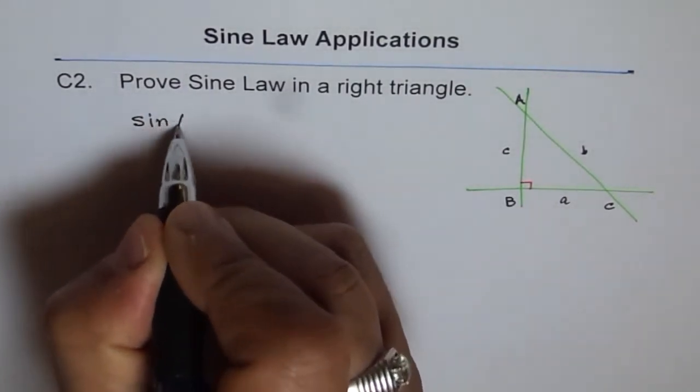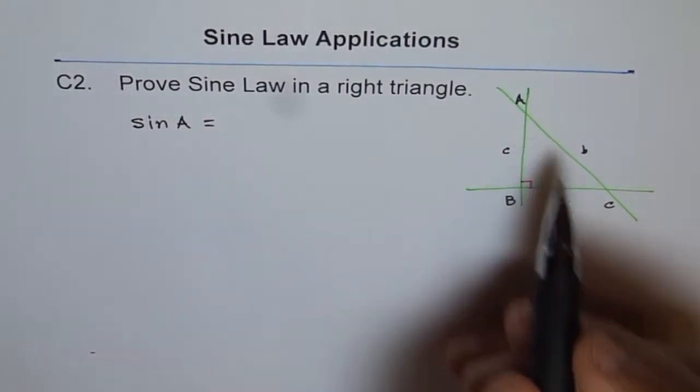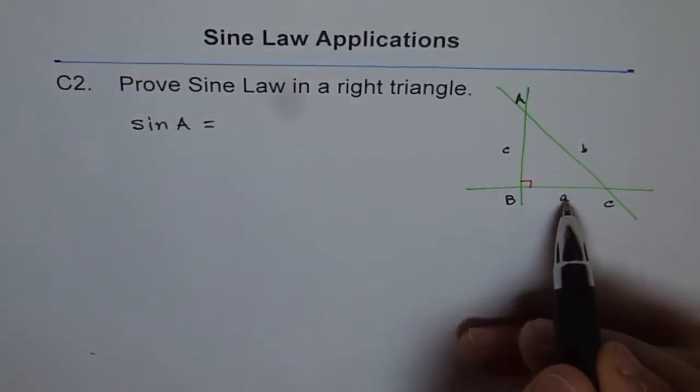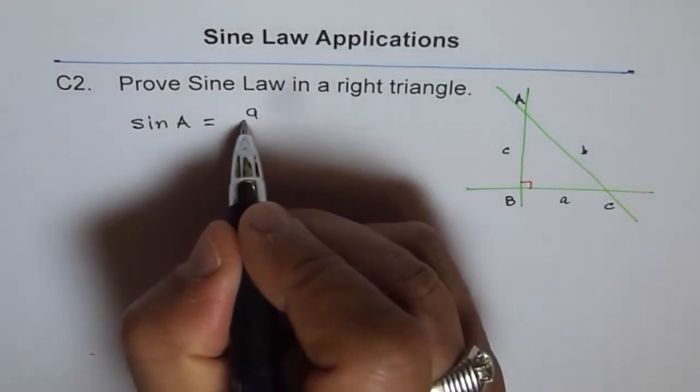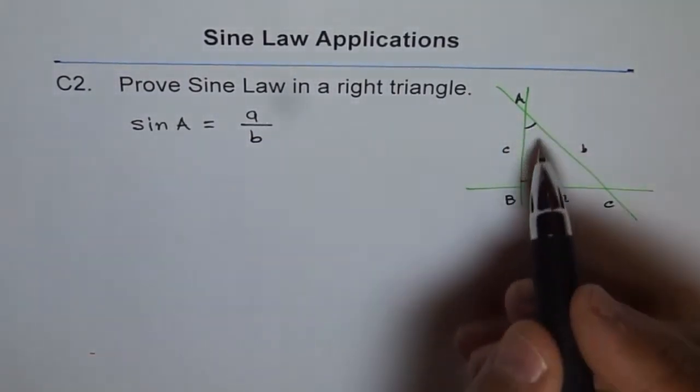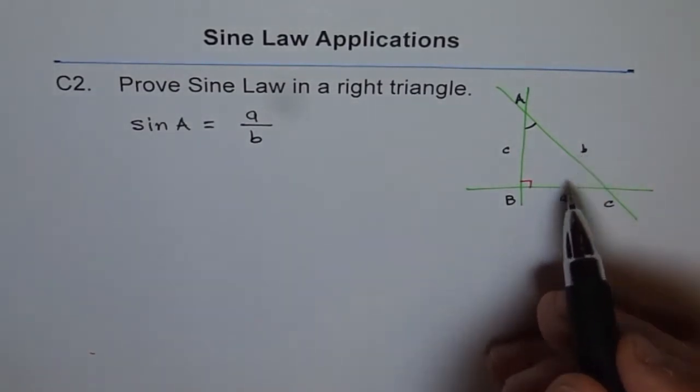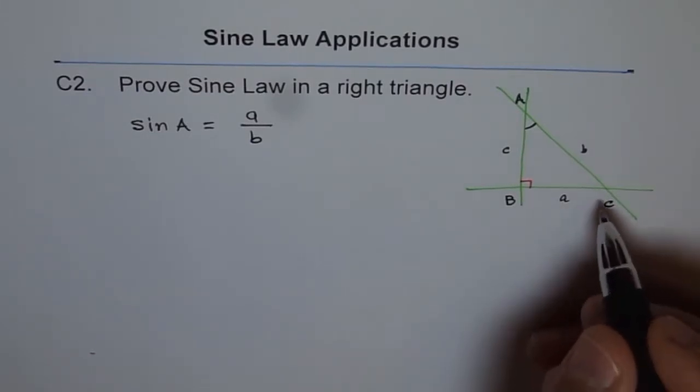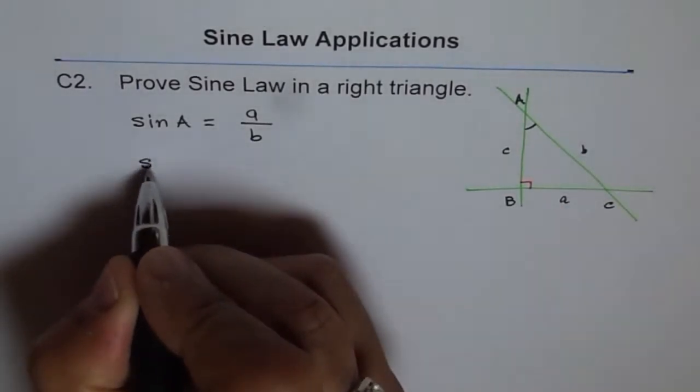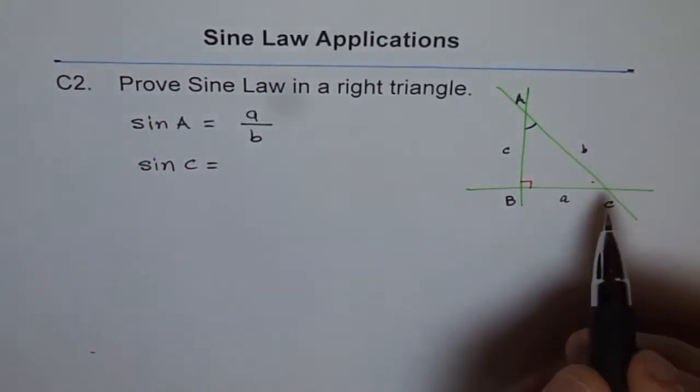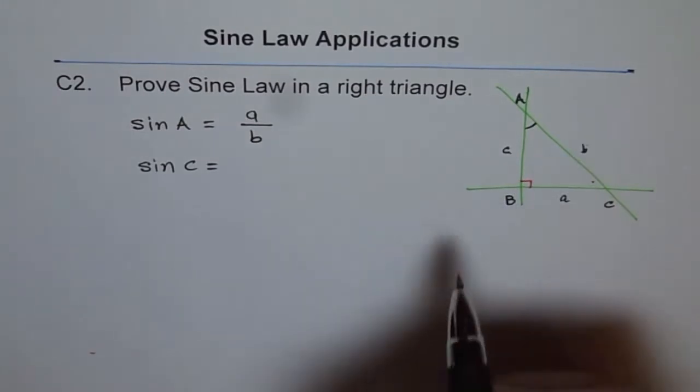What is sin A for us? From here we can say sin A is opposite over hypotenuse, so it is a over b. Now what is sin C? Looking from that side, we say sin C is opposite over hypotenuse, so it is c over b.